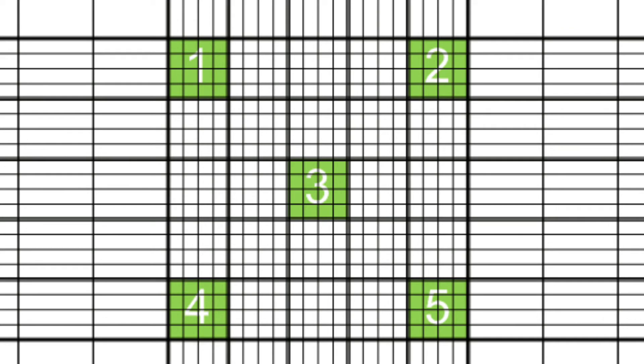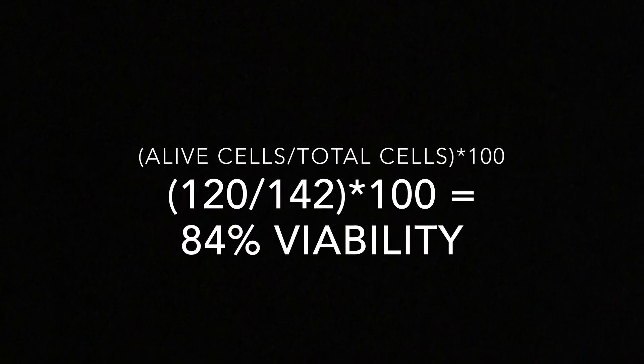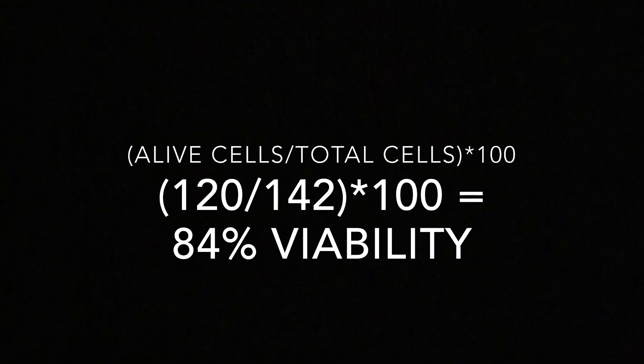After you've counted all five squares, you're ready to do your calculations. A simple ratio of alive cells to total cells gives you your percent viability.